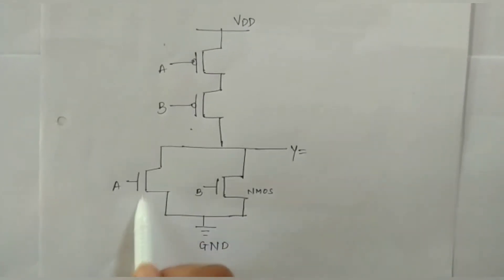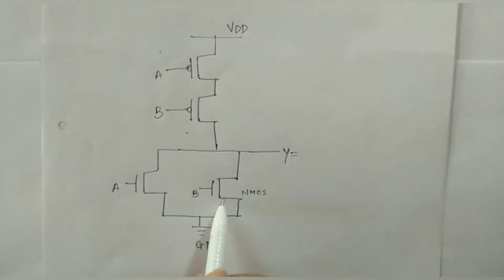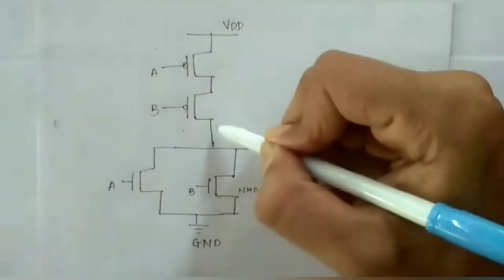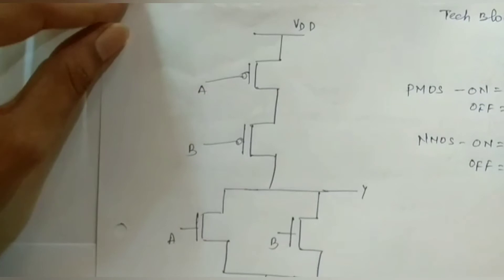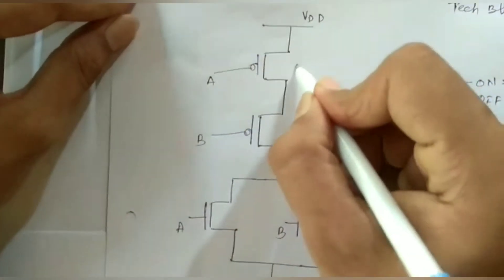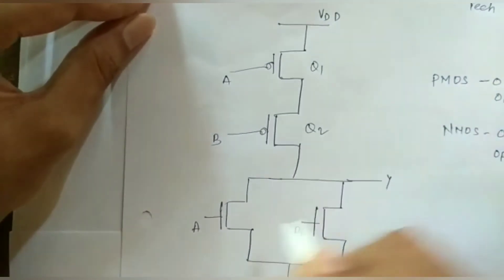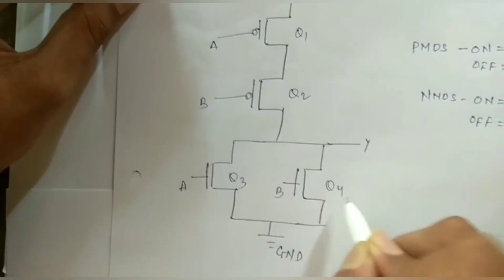So this NMOS is connected parallel and this is a series. We will mark them as Q1, Q2, Q3 and Q4.